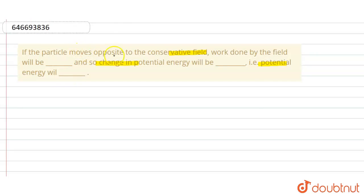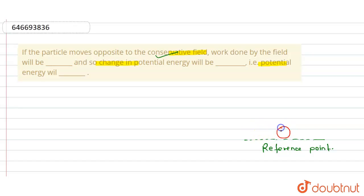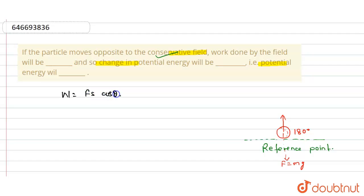As we know, the particle moves opposite to the conservative field. Consider there is a reference point. A particle is moving in the upward direction and there is a force equal to mg acting in the downward direction. So the angle made by them is 180 degrees. The work done by the conservative field is W = Fs·cosθ, and since θ = 180°, cos 180° = -1.